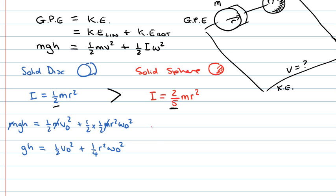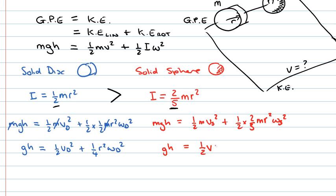Doing the same for our sphere: Mgh equals one-half times mass times v²(sphere) plus one-half times two-fifths times mass times r² times ω²(sphere). Mass cancels again, leaving: gh equals one-half v²(sphere) plus one-fifth r²ω²(sphere).